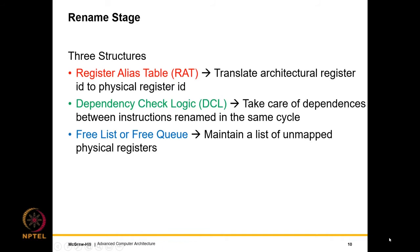For renaming, three hardware structures are needed. First is the Register Alias Table (RAT), also called the rename table, which translates architectural register IDs to physical register IDs. Second is dependency check logic, needed because multiple instructions are renamed per cycle — for example, four instructions per cycle — and dependencies between those instructions cannot be handled by the RAT alone since they are renamed in parallel. The RAT cannot resolve intra-bundle dependencies by itself.